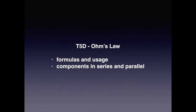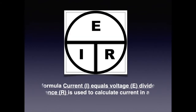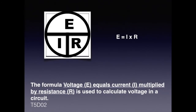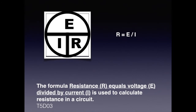Next up is Ohm's Law. We are going to be talking about formulas and usage, components in series and in parallel. For Ohm's Law, we can use our familiar pie chart, but instead of P over I times E, we substitute E over I times R. For the exam, know that current equals voltage divided by resistance, voltage equals current multiplied by resistance, and resistance equals voltage divided by current — these are the formulas used to calculate each respective value in a circuit.